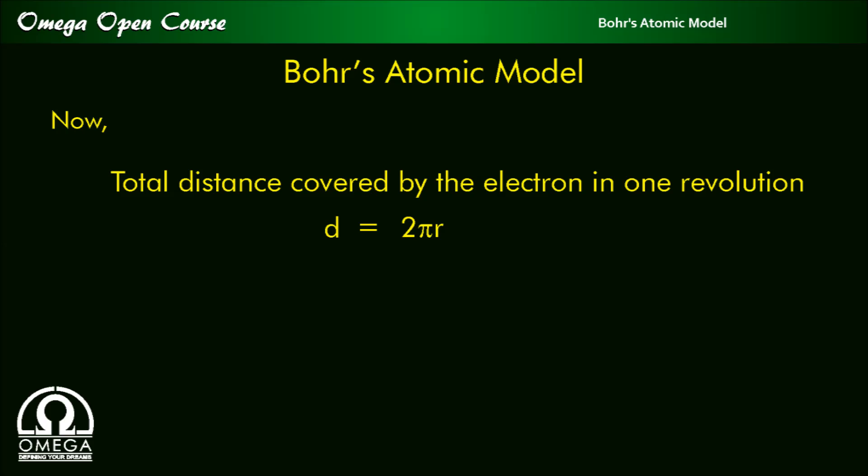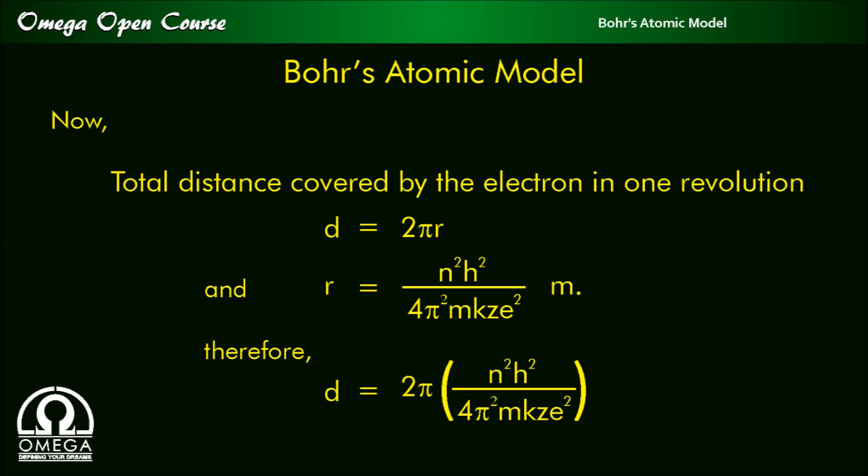Now the total distance covered by the electron in one revolution, d, is equal to 2πr. And r is equal to n²h² / 4π²mkze² meters. Therefore, distance d is equal to 2π × (n²h² / 4π²mkze²), which simplifies to n²h² / 2πmkze².